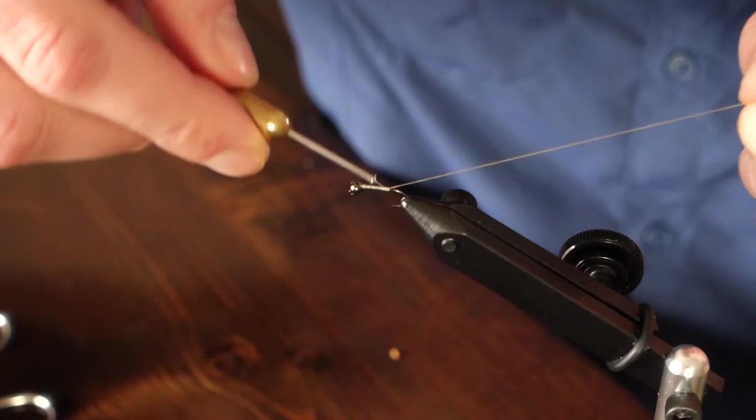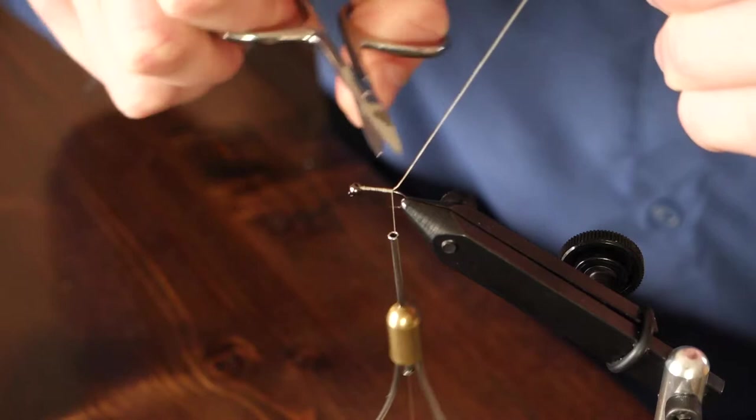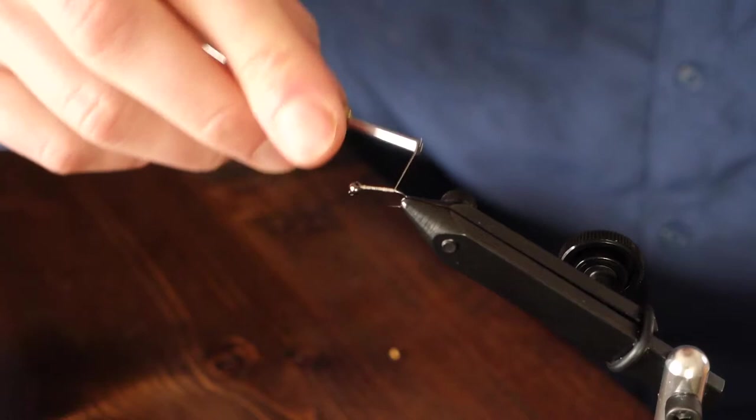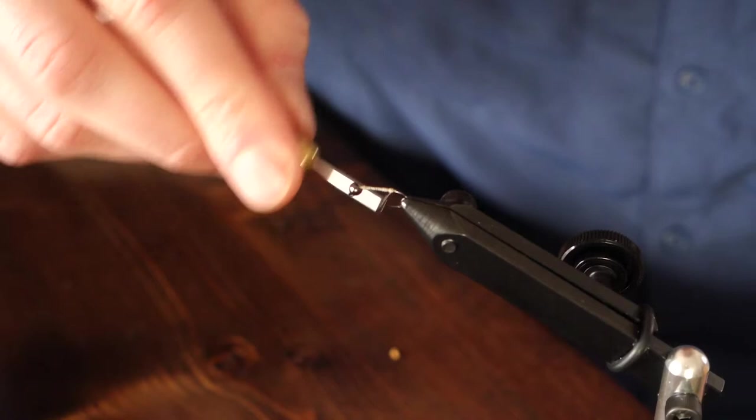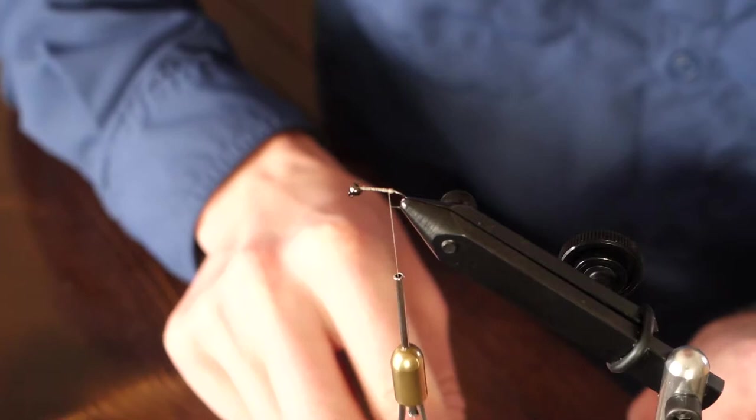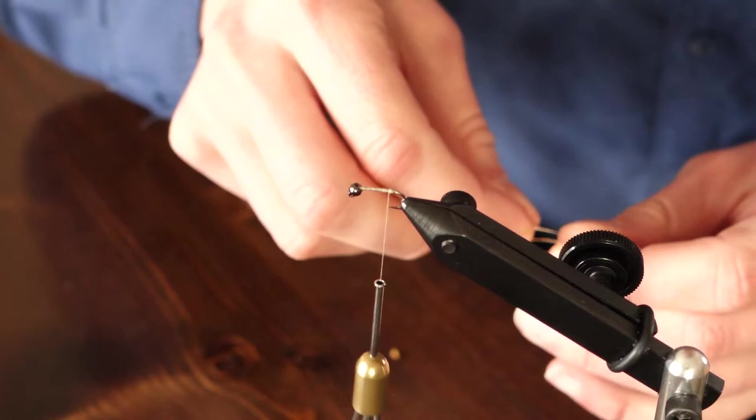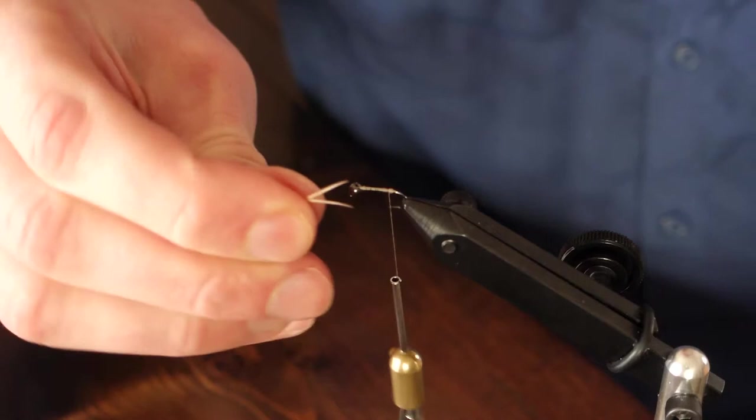We're going to make our thread wraps back to the bend of the hook and once we snip our tag in, we're going to build up a thread bump here. A few wraps should take care of it. The purpose of this is to help splay the tails of this fly and make sure they point outwards from each other. On stone flies the tails are really prominent. That's one of the biggest indicators that it's a stone fly other than the size of it. They do have two forked tails coming off.